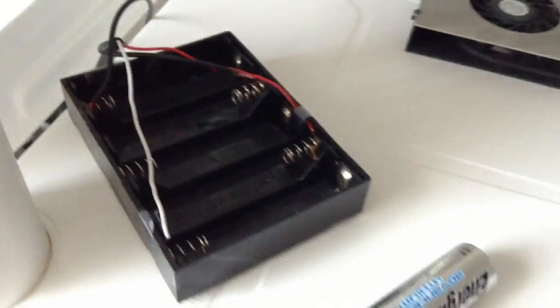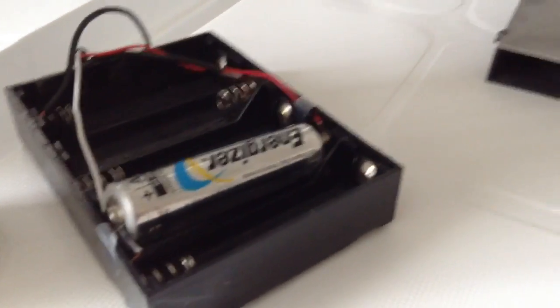The wires go from the downrod to a battery pack. It runs on just a single double-A battery. So I'll turn the fan on, I'll put the battery in, and here it goes.